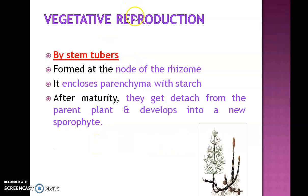Vegetative reproduction means reproduction or multiplication with the help of vegetative parts. Vegetative reproduction in Equisetum is mainly by stem tuber formation. Stem tubers are tuber-like structures seen at the nodal region of the rhizome, which store starch in them. After maturity, they get detached from the parent plant and develop into a new sporophyte.